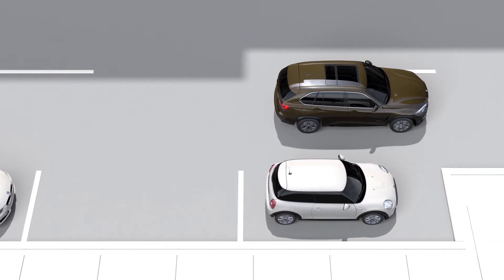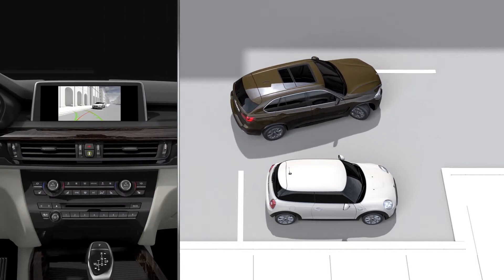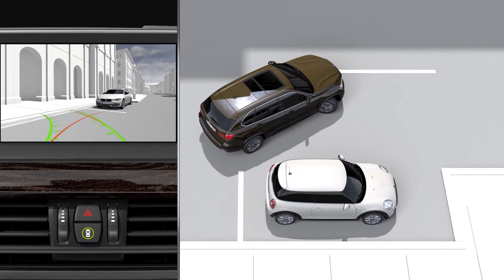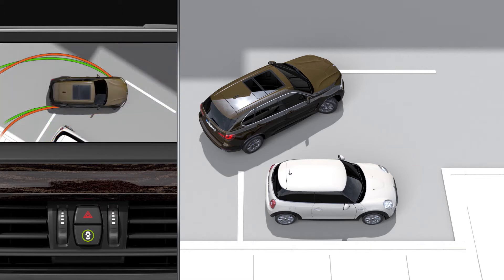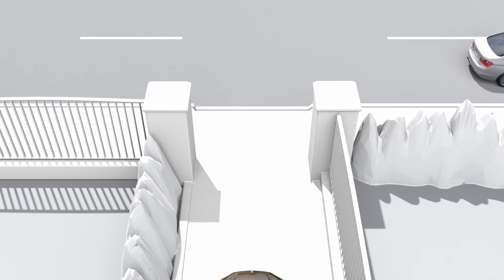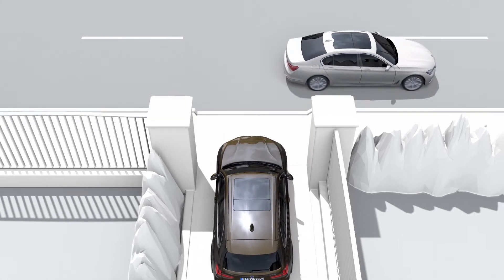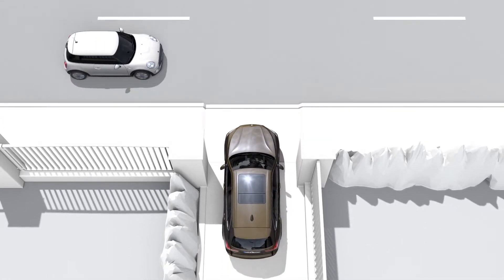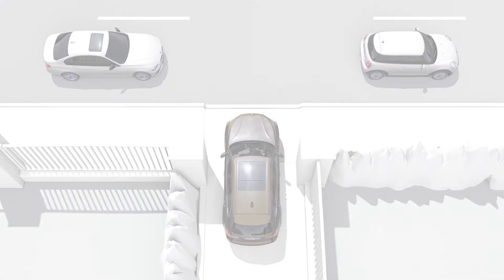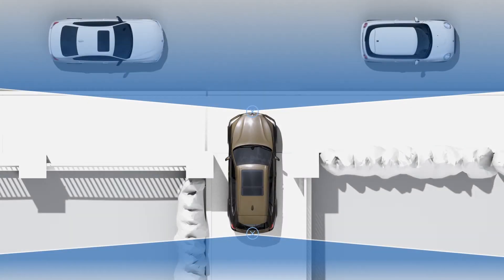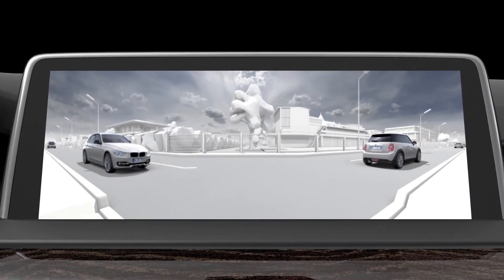The surround view camera system provides support in a number of traffic situations by allowing the driver to show various camera angles around the vehicle in the control display. When the vehicle enters streets or intersections with a poor view, the cameras in the front or rear of the vehicle can be activated. The road area is shown on the control display.